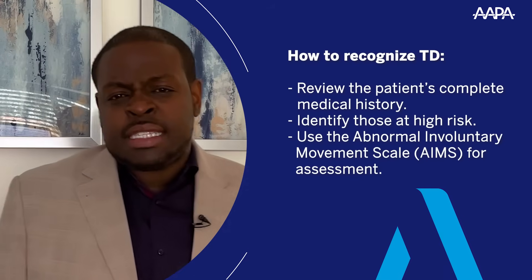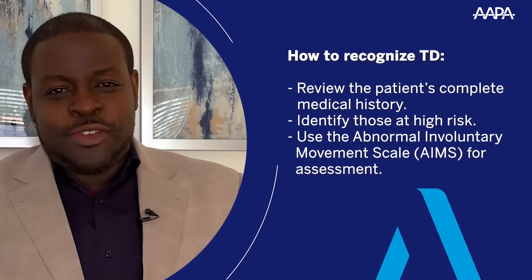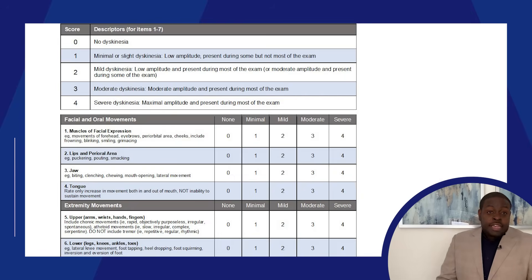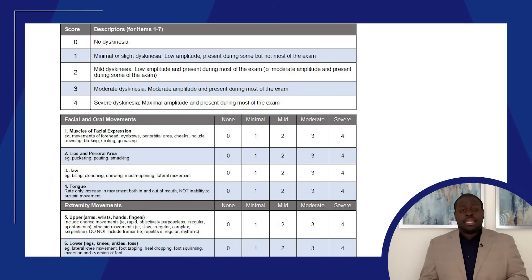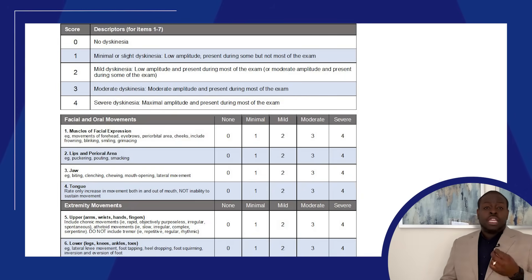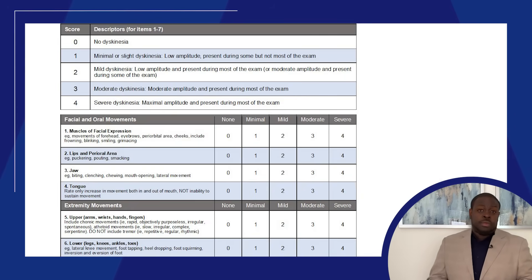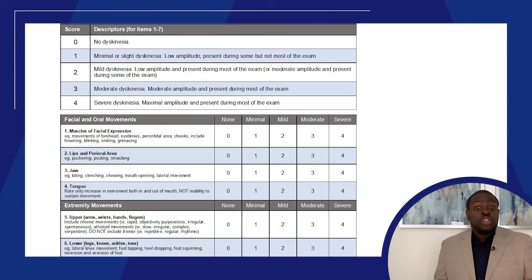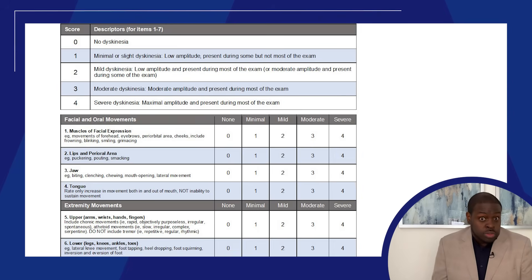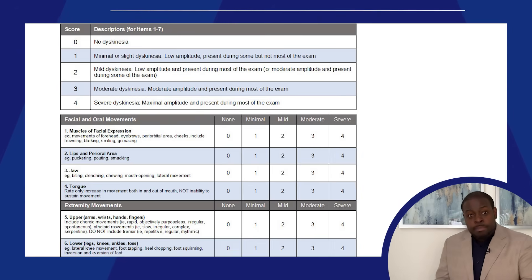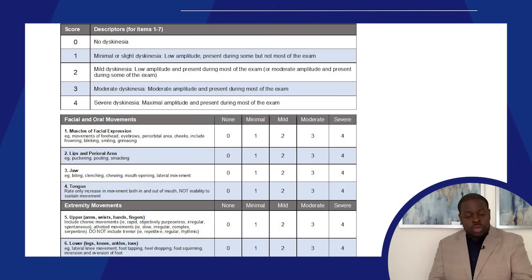I discussed this in my first video. Next, we should really begin to utilize the Abnormal Involuntary Movement Scale. This is a structured monitoring screening tool that helps us to not only begin to see the movements, but measure them throughout time. It's often commonly called the AIMS.